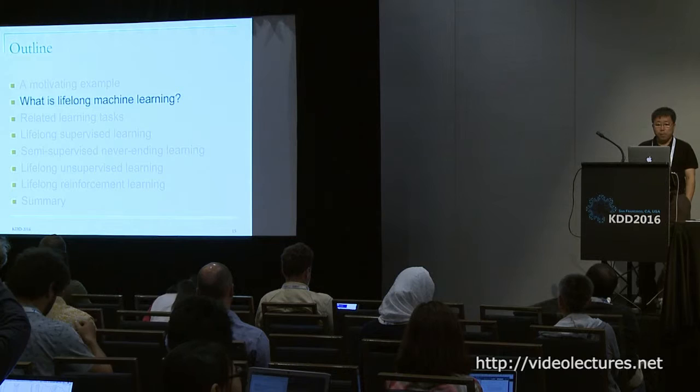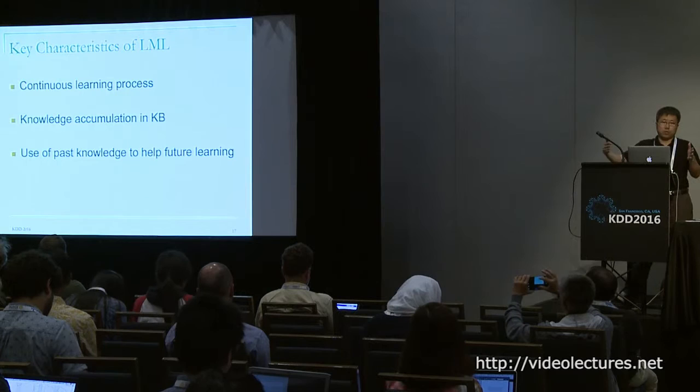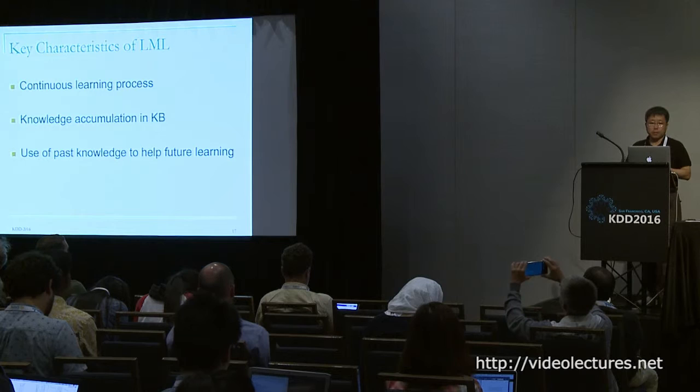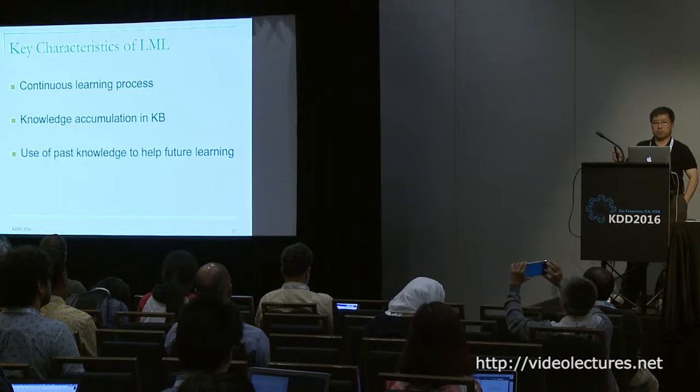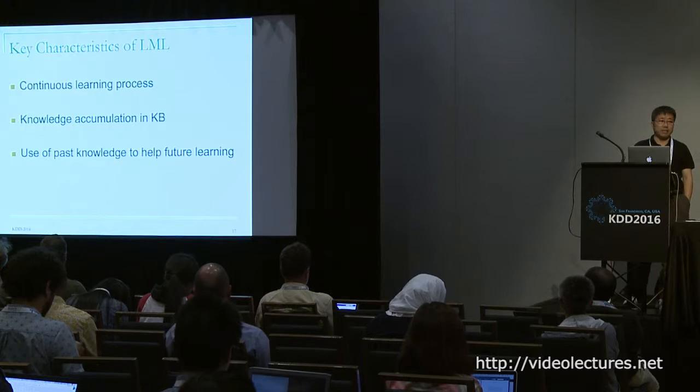The key characteristics of this type of learning are: first, you have to learn continuously — just learning once is not very interesting. Second, knowledge has to be accumulative — you cannot just forget about it and go back to labeled data every time. Third, you have to have a knowledge-based, more intelligent kind of learning algorithm that is able to exploit the knowledge learned in the past to do better in the future.